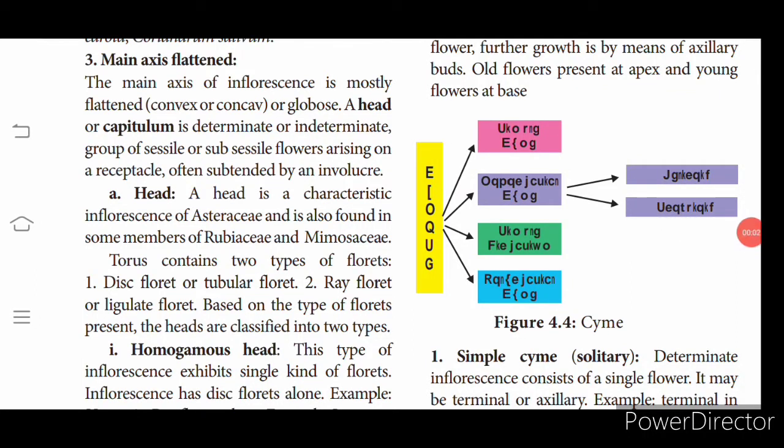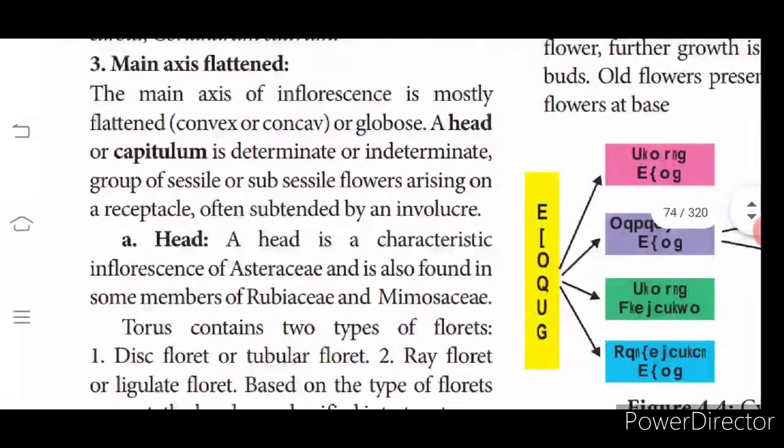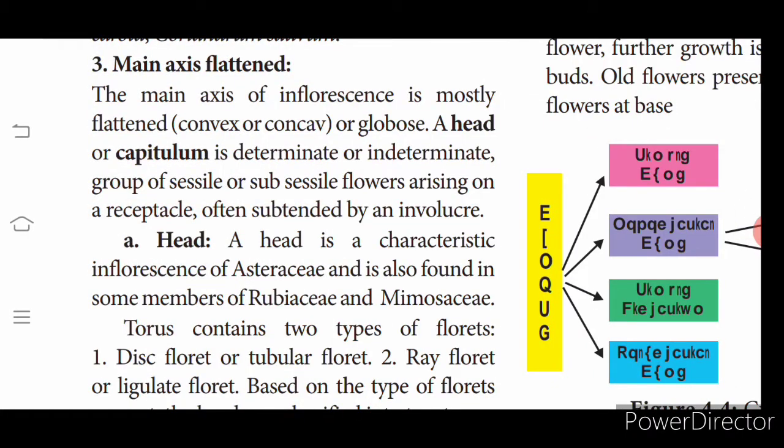Hello students, welcome to Class 11 Biology. Last class we covered racimose inflorescence and cymose inflorescence outline. In racimose inflorescence, there is a type called main axis flattened. The main axis is also called the rachis. Once it is flattened, it forms a cup-like structure — concave, convex, or globose in shape — called a head or capitulum inflorescence.